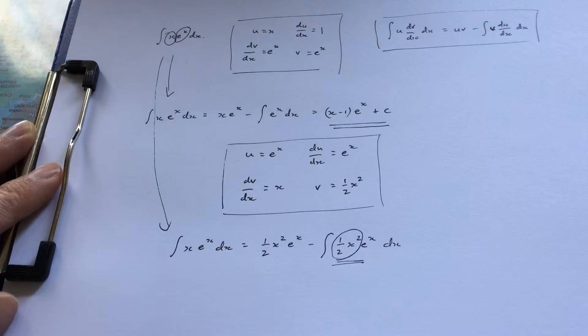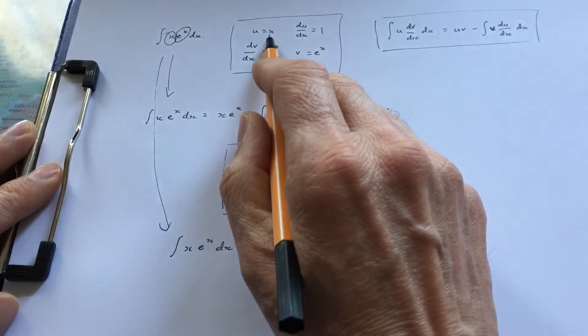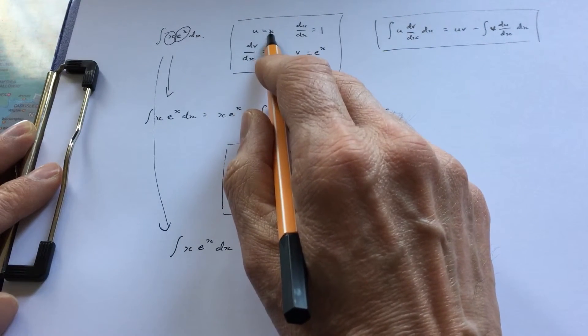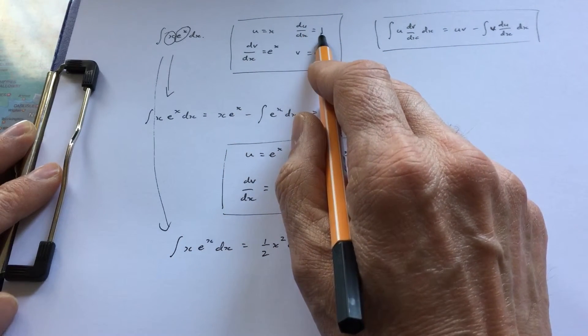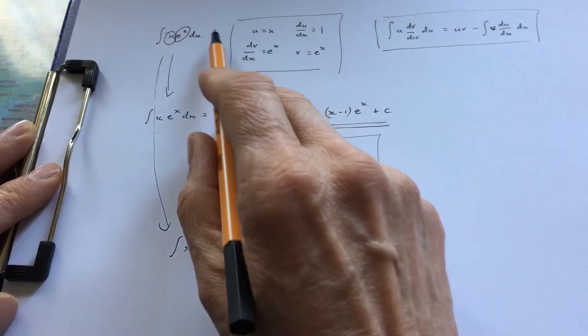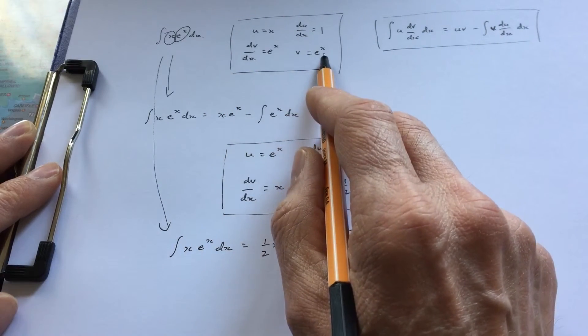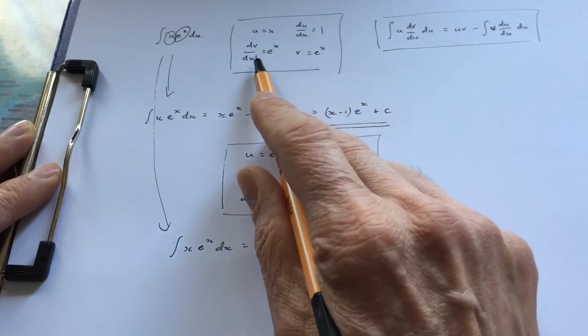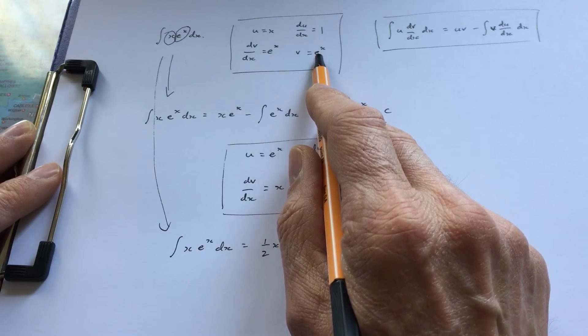I prefer to think about it. I generally want u to be something that gets simpler when differentiated, and dv/dx to be something that gets simpler or stays the same when integrated, as in this example.